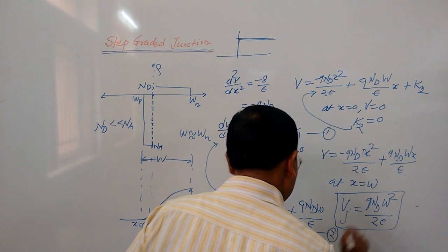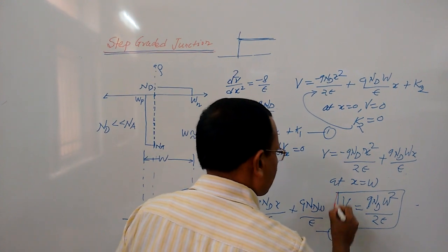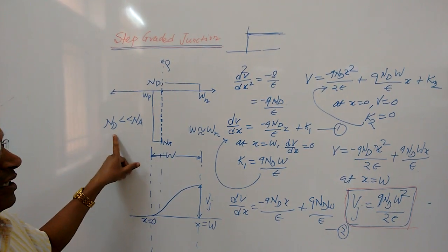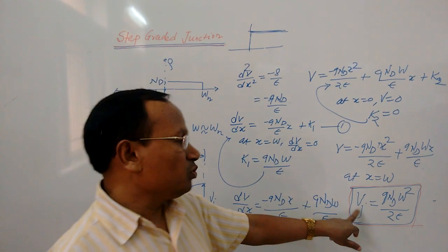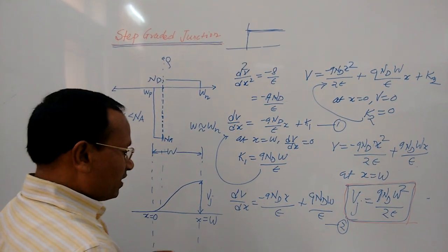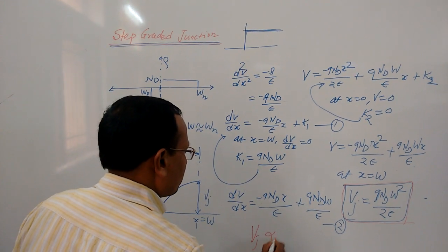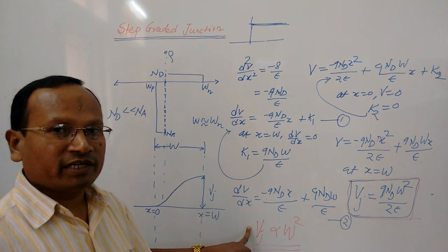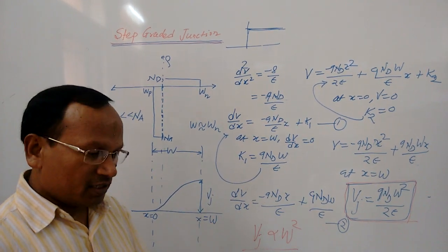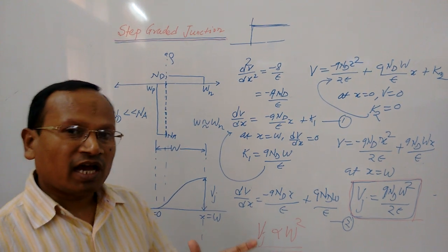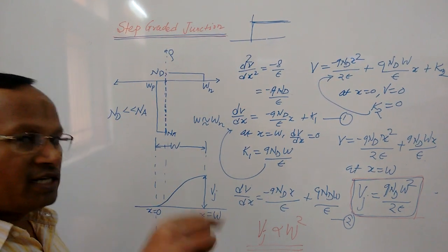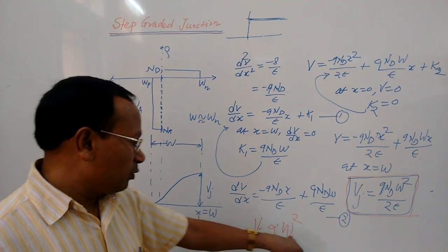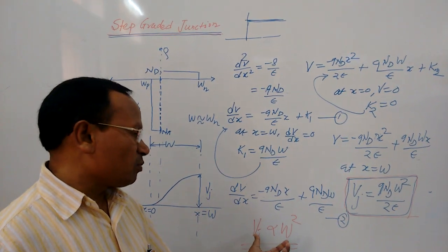This is the expression for junction potential — a very very important expression. Junction potential in the case where Nd is much much smaller than Na. It can be easily concluded that Vj is proportional to W², and inversely W is proportional to the square root of Vj. This property is exploited in the varactor diode, where the capacitance varies with junction voltage: Ct is inversely proportional to the square root of Vj. Since capacitance equals epsilon over W, and W is proportional to the square root of Vj, this governs the varactor diode behavior.